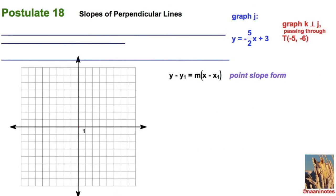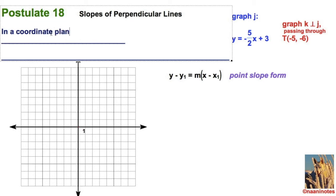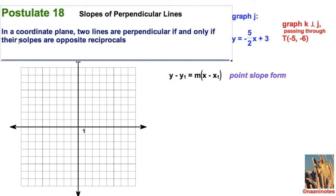Let's look at perpendicular. Sticking with our textbook, we're going to jot down postulate 18 in our MacDougall-Littell textbook. Write with me: In a coordinate plane, two lines are perpendicular if and only if their slopes are opposite reciprocals.